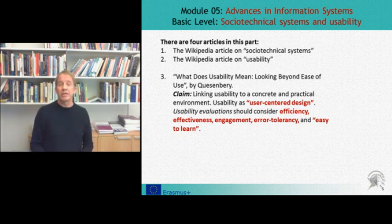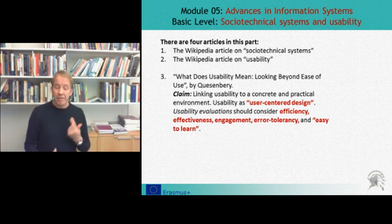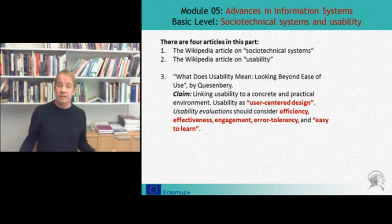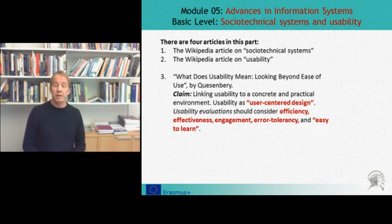Usability is linked to user-centered design. In a concrete and practical setting, it is claimed that usability evaluation should consider the five E's: efficiency, effectiveness, engagement, error tolerance, and easy to learn. This text will help you to understand how possible social and technological interactions can be analyzed ahead of the implementation of a new technical system, network, or device. In this way, it should be interesting and very useful for you in your work on your assignment.